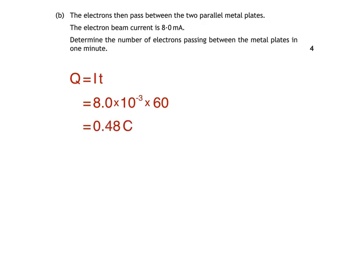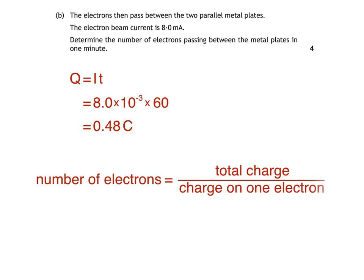Here's how we calculate the number of electrons making up this charge. We just divide the total charge of 0.48 coulombs by the charge on one electron, like so, giving us an answer of 3 times 10 to the power of 18 electrons.